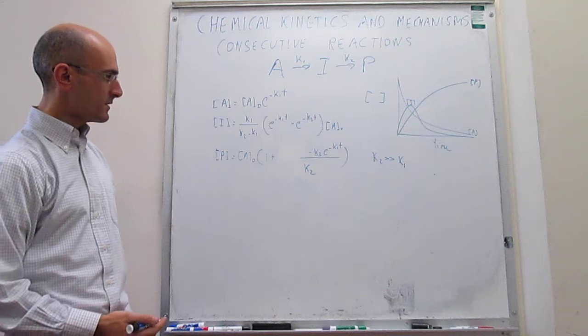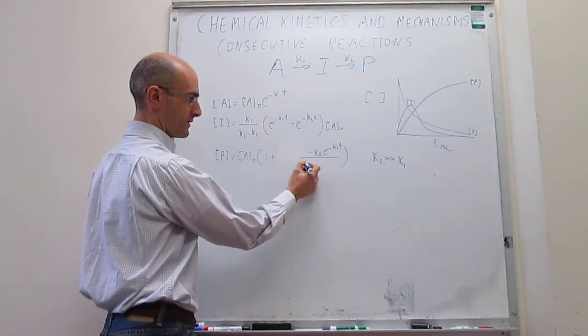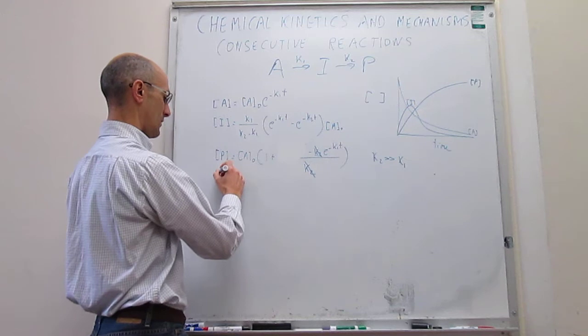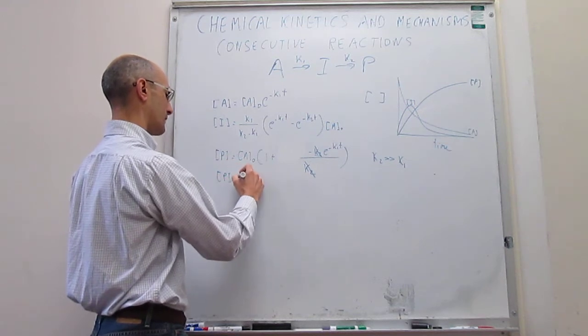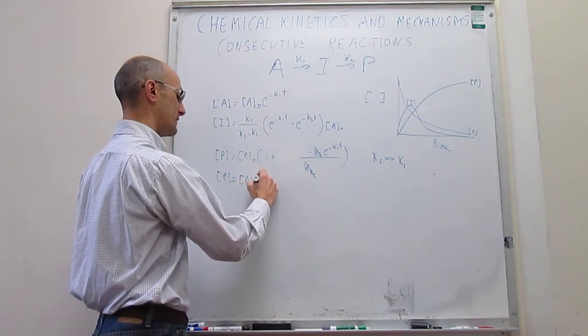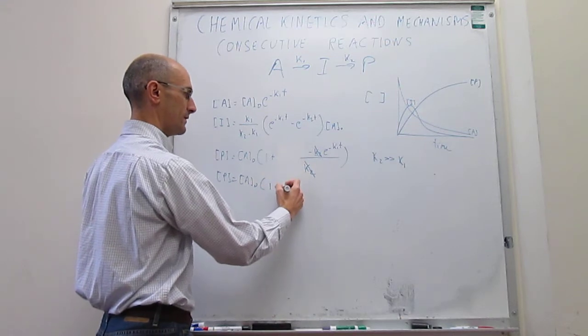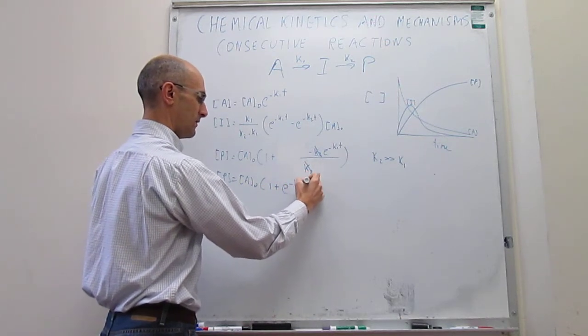And you can see that automatically there's going to be a cancellation here of these K2 terms, those two, and the final rate law for products under these conditions is going to be 1 minus e to the minus K1 t.